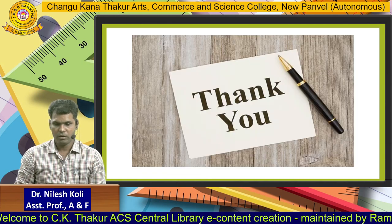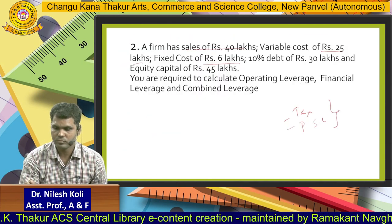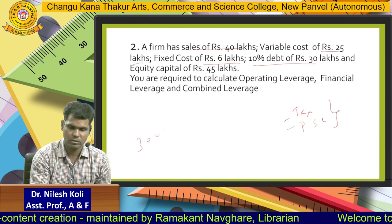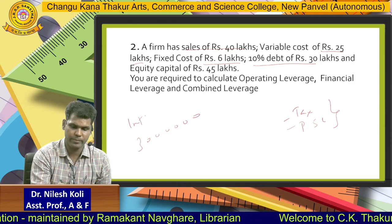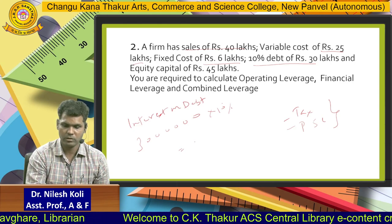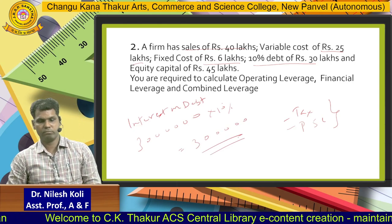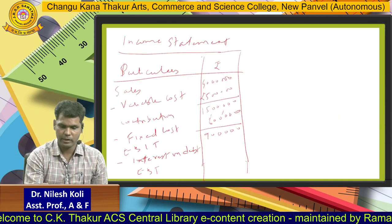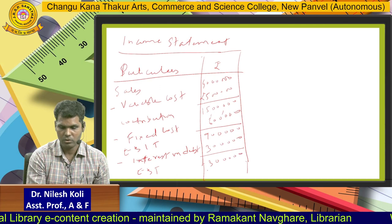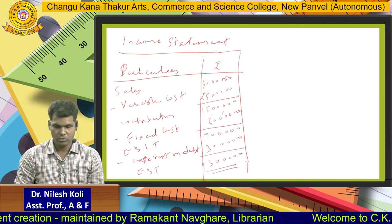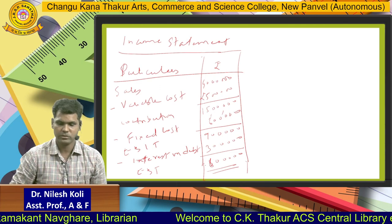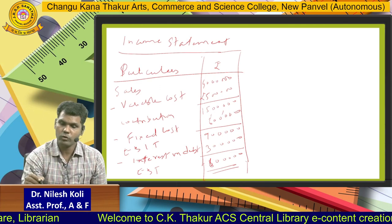So 15 lakhs minus 6 lakhs equals 9 lakhs — that is the EBIT, which is 9 lakhs. Then Interest on Debt: 10 percent debt of 30 lakhs, so 30 lakhs into 10 percent equals 3 lakhs. So interest on debt is 3 lakhs. Therefore EBIT minus interest: 9 lakhs minus 3 lakhs equals 6 lakhs, so EBT is 6 lakhs.